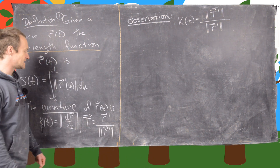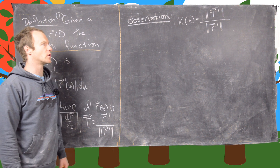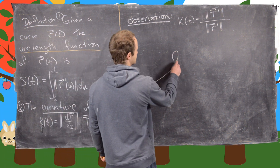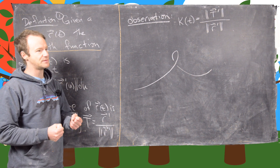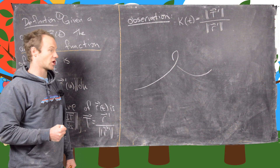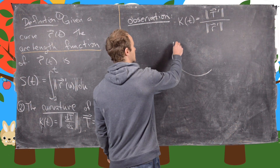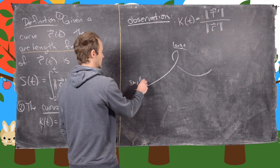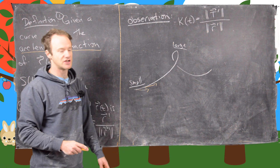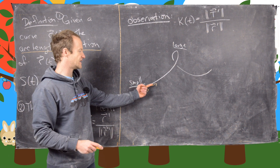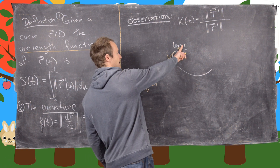Let's look at why this is the right definition of curvature. Let's say we've got a curve like this — that is our curve r of t. Curvature should be defined as how curvy the curve is. It's really tightly curved in this region, so the curvature should be quite large here and quite small in this flatter region. In the flat region the tangent vector is barely changing at all, whereas up in the tight region the tangent vector has been changing direction a lot.